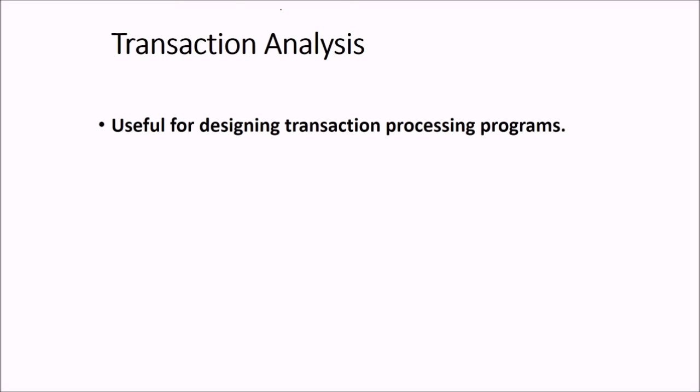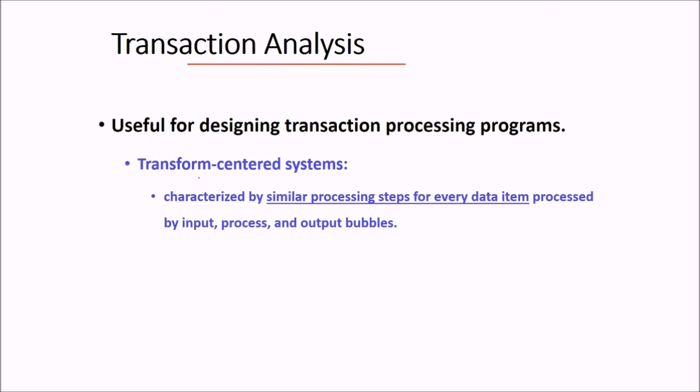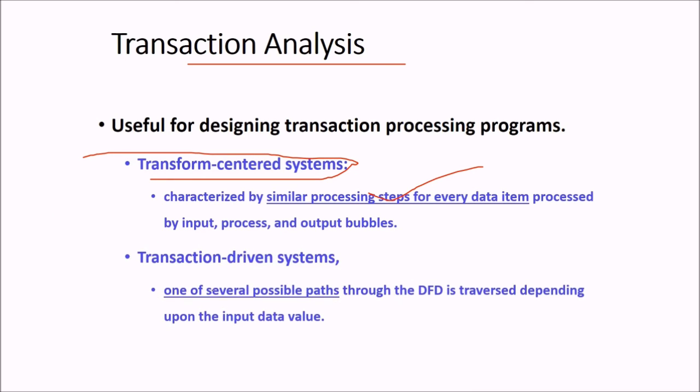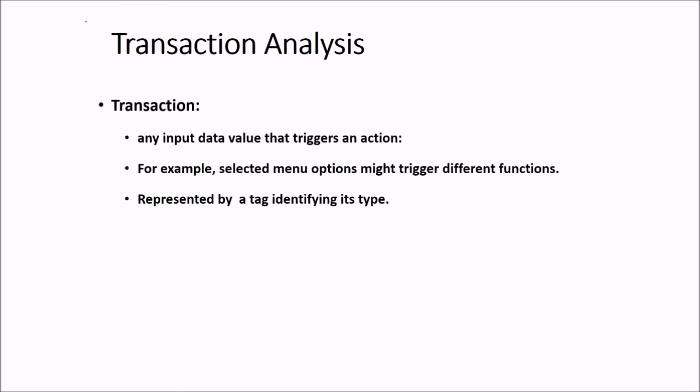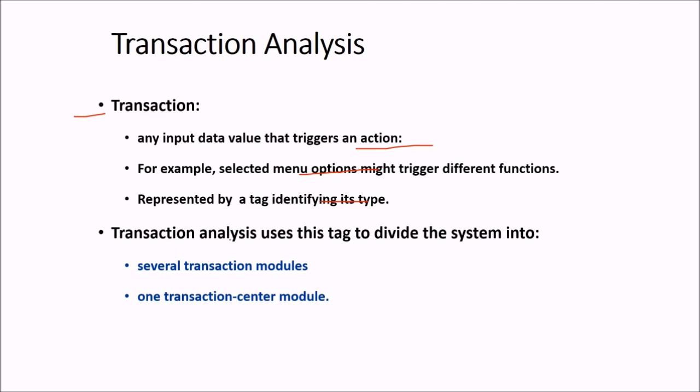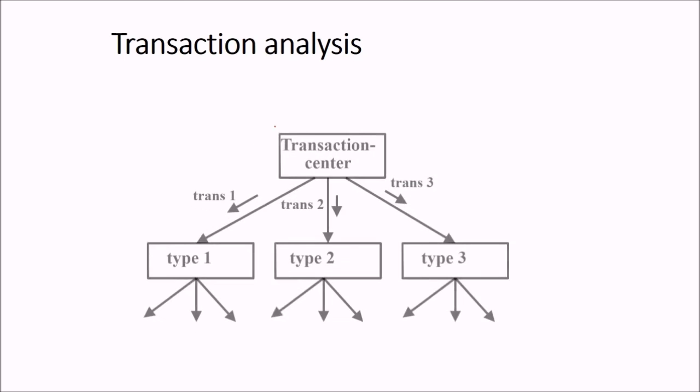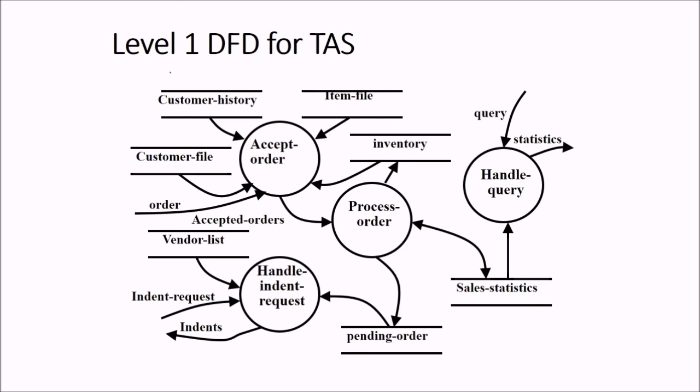Then we come to transaction analysis. This is useful for designing the transaction processing programs. So we choose this transform-centered system, which is characterized by a similar processing system by every data item, which is processed by 3 things, input, process and output bubbles. And this transaction-driven system, we have one of several possible paths through which the DFD is traversed depending upon the input data value. So transaction, you know, giving, passing, transaction is, if I transact you, I will give you money, you will receive the money. In the same scenario, any input data value that triggers an action. Just for instance, select menu options might trigger different functions, which is represented by a tag, identifying its type. And then transaction analysis uses this tag to divide the system into two things, several transaction modules and one transaction center module. This is transaction center. These are several transaction parts.